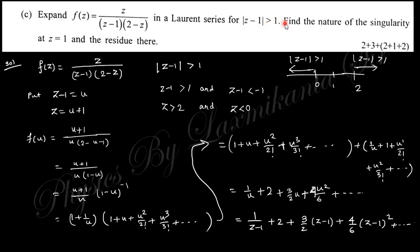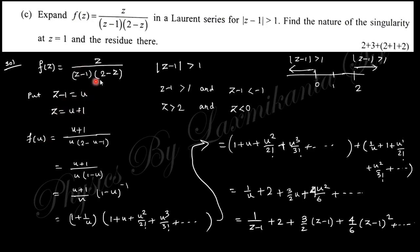Next, expand this function in a Laurent series for |z − 1| > 1, find the nature of the singularity at z = 1, and the residue there. The condition |z − 1| > 1 signifies z > 2 or z < 0. Take z − 1 = u so z = u + 1; substituting this value into the function and expanding, you will obtain the Laurent series expression.